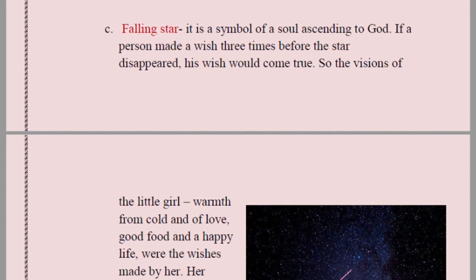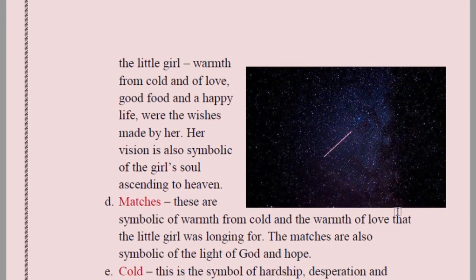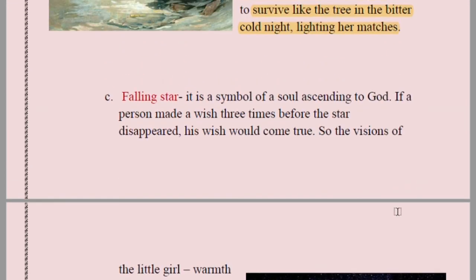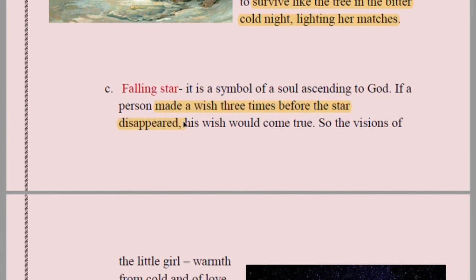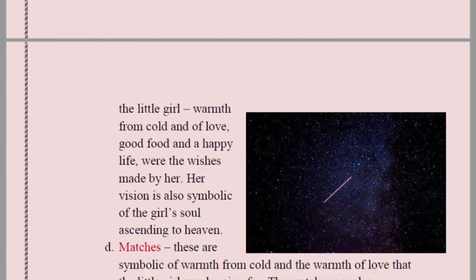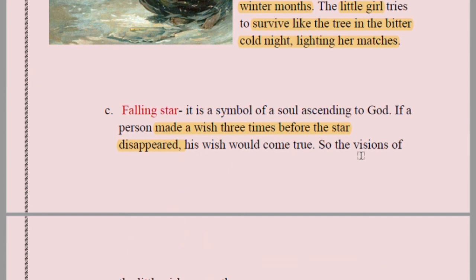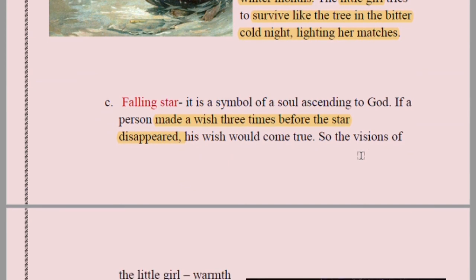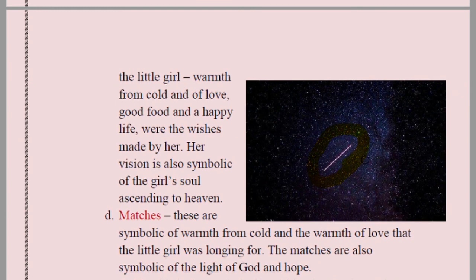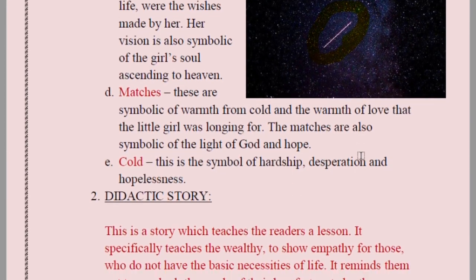Falling star — symbol of a soul ascending to God. The grandmother believed that whenever a falling star was seen, somebody died on earth and went to God. There is also the idea that if a person makes three wishes before the falling star disappears those wishes are fulfilled. The little girl had three visions or wishes — warmth, good food, happy life — symbolizing she was going to God and would receive everything she wanted.